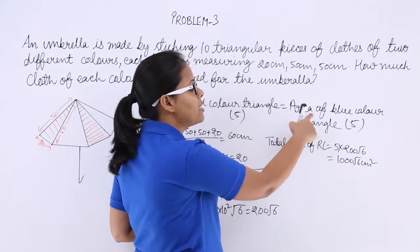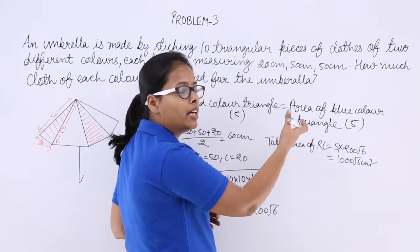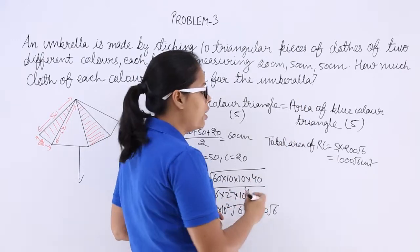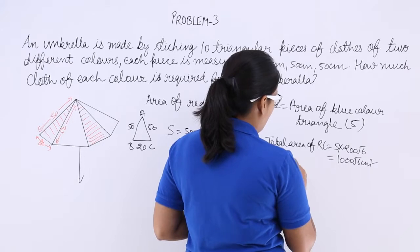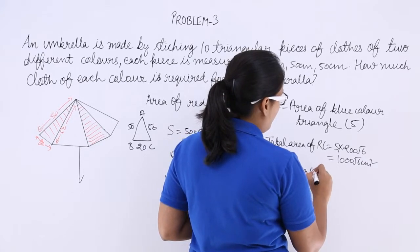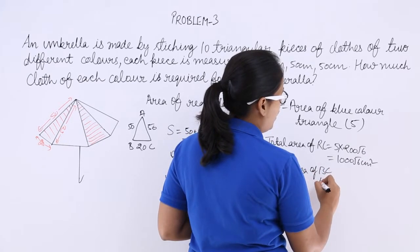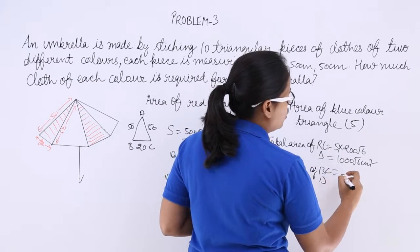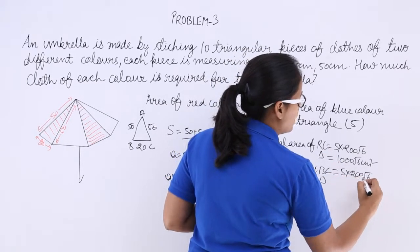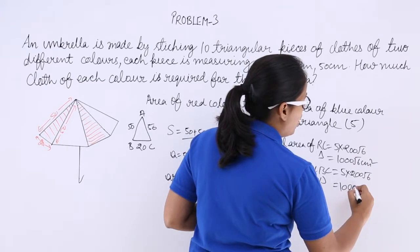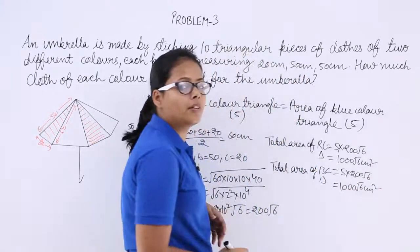And again, as the area of red colored triangle is equal to the area of blue colored triangle, it will be equal to total area of blue colored triangle. So this will be again 5 into 200√6. So you will get 1000√6 centimeter square.